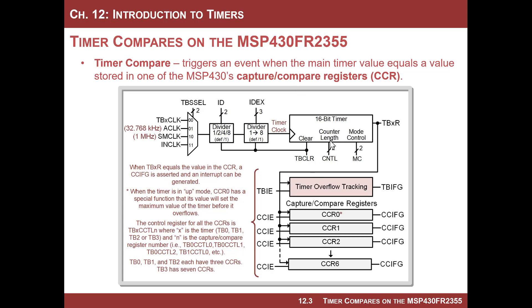A compare is when we are going to be able to determine the exact count that we want the event to trigger on. The way it's done is by using these compare registers. The whole theory is that you, as the developer, decide when you want the event to occur — what count value — and then you simply place it into one of these compare registers. When the timer reaches that hard-coded value, it will raise the flag, and that flag can then be used to trigger an interrupt.